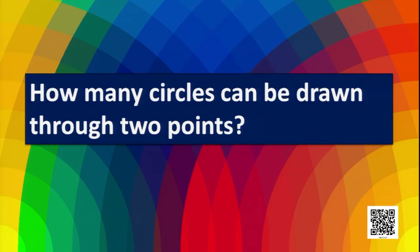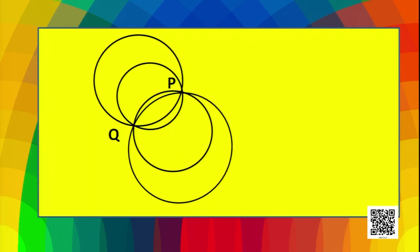Now what about two points? How many circles can be drawn through two points? P and Q are two points and here we have drawn so many circles. So we can draw infinitely many circles through two points.